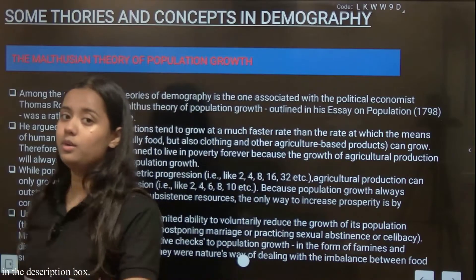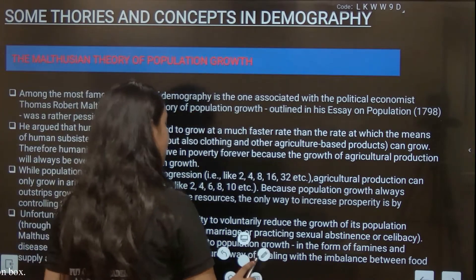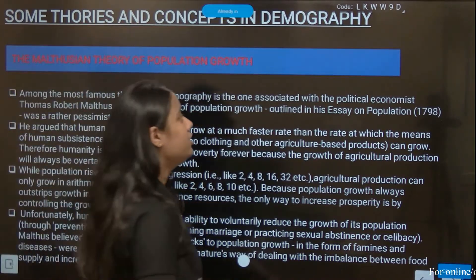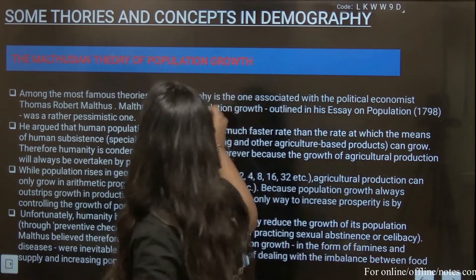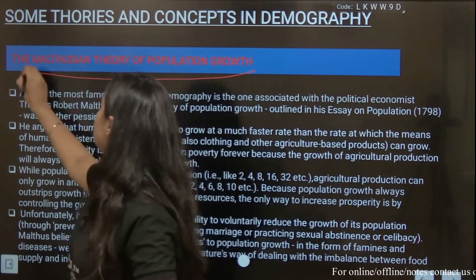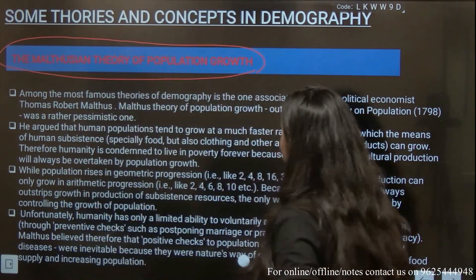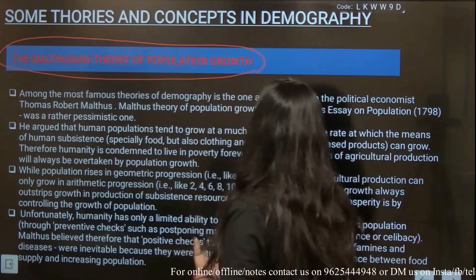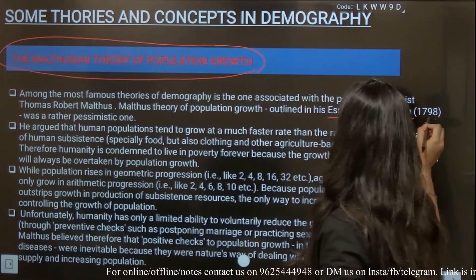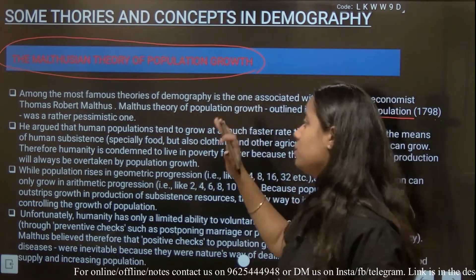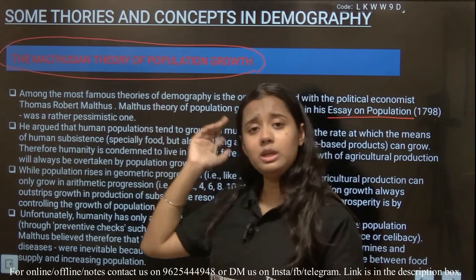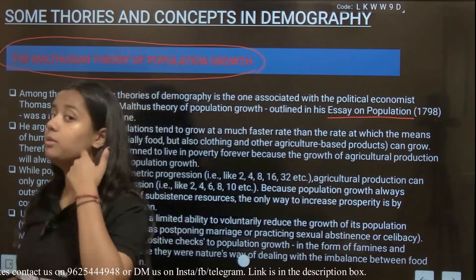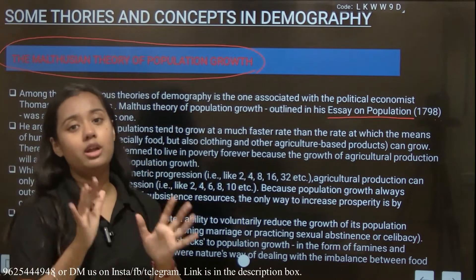We will start by studying the theories which sociologists have given us. The first theory is the Malthus theory of population growth — among the most famous theories of demography — from his essay on population. This theory is very important in papers, and the most important thing is to understand its key ideas.